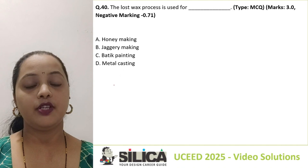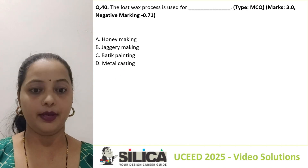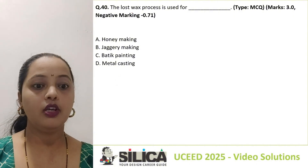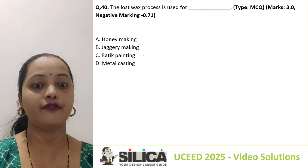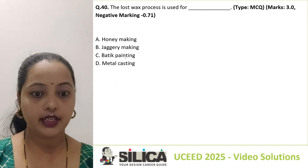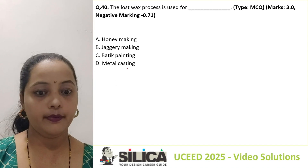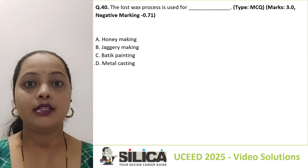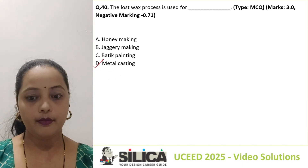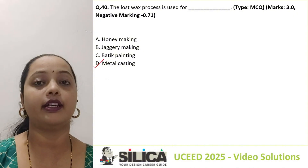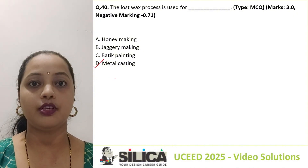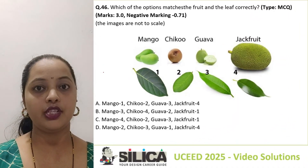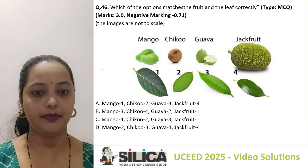This is question number 40, an MCQ question. The lost wax process is used for — and we have four options: honey making, jaggery making, batik painting, and metal casting. It's a GK question and the answer is straightforward: option D, metal casting. So D is the correct answer.